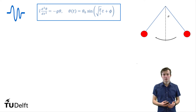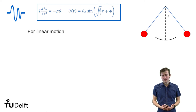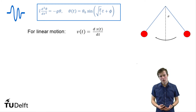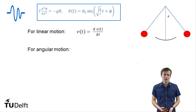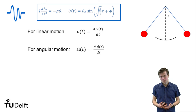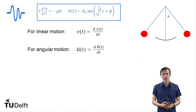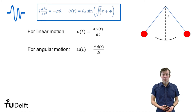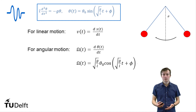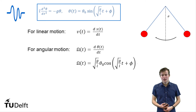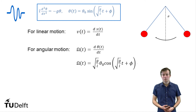For linear motion, it holds that the linear velocity is equal to the derivative of the linear position. For angular motion, the same holds: the angular velocity is equal to the derivative of the angular position, and we will denote this angular velocity with capital omega. We can take the derivative of our theta function and obtain it as the square root of g over l times theta zero times the cosine of the square root of g over l times t plus phi.